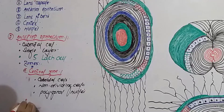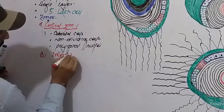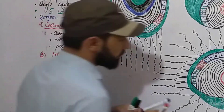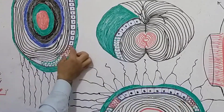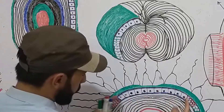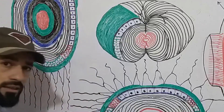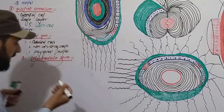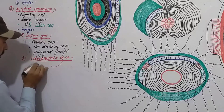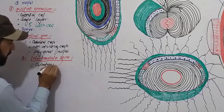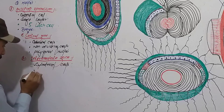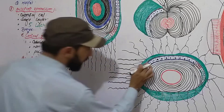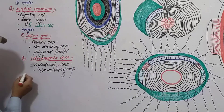The second zone is the intermediate zone. As shown here with red color, this zone lies between the central zone and the lateral or germinal zone. The intermediate zone cells have a cylindrical cell shape, and they are also non-dividing cells.